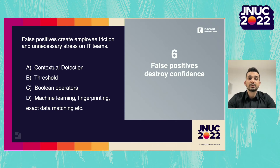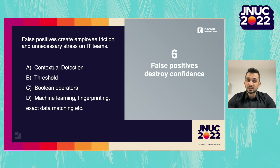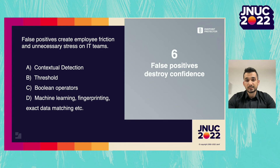Boolean operators can also be very useful to create more complex policies. Typically, several data points are needed to identify a person from a GDPR standpoint. Logical operators can help you build DLP policies with AND/OR conditions. A quick example would be to scan for American Express, Visa, or MasterCard numbers and also require dates and names in proximity of the credit card numbers. Machine learning, document fingerprinting, or exact data matching are other techniques that can successfully be used to minimize false positives.